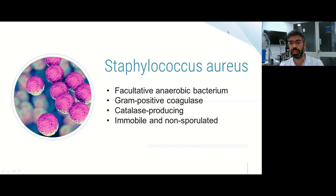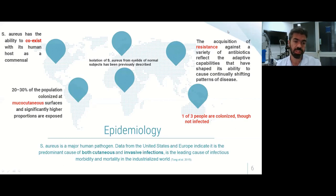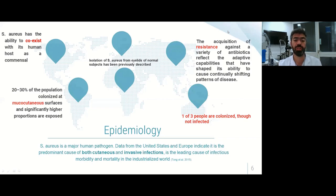Let's remember a little bit about the staphylococcal bacteria. It's a facultative anaerobic bacteria, gram-positive, catalase-producing, immobile and non-sporulate. Regarding epidemiology, the staphylococcus is a major human pathogen. Data from the United States and Europe indicate it's the predominant cause of both cutaneous and invasive infections, and it's the leading cause of morbidity and mortality in the industrialized world.